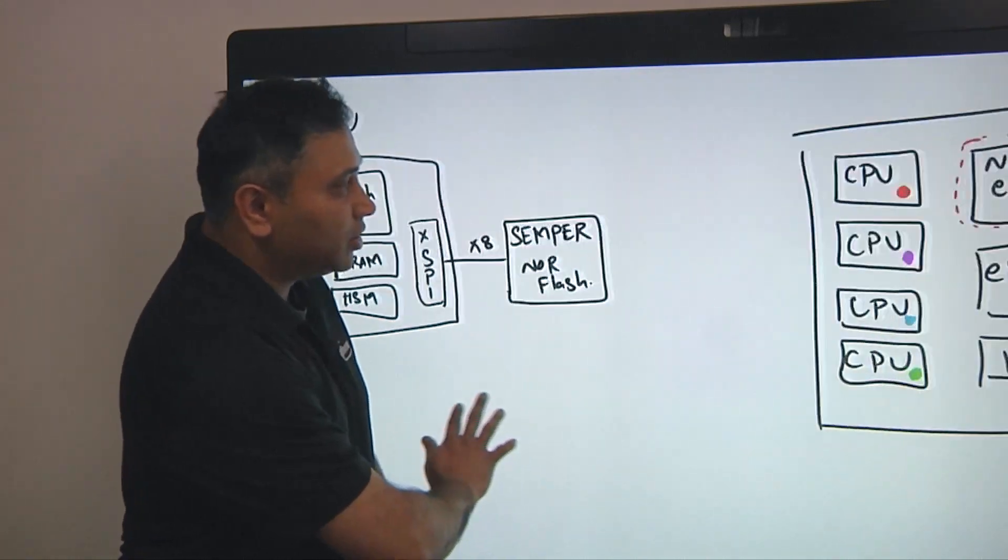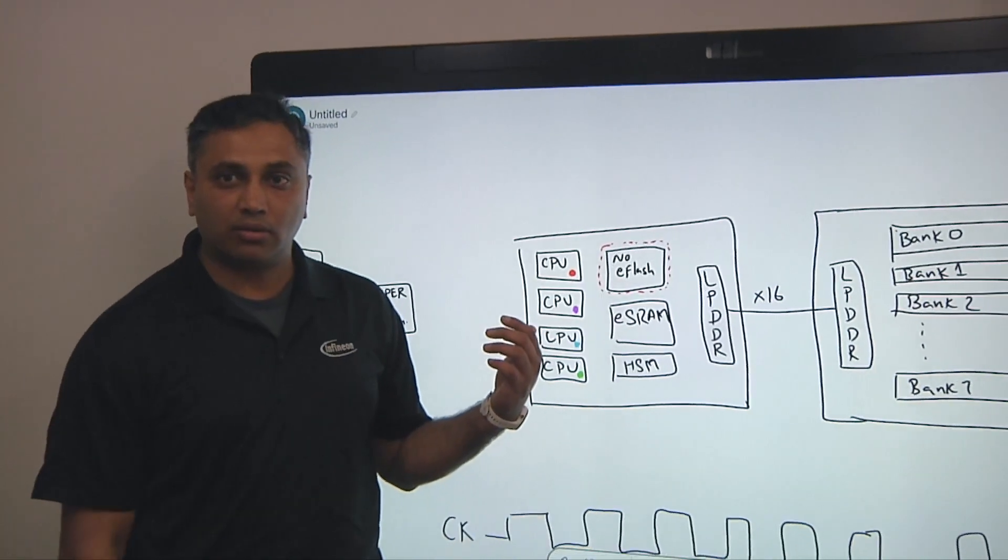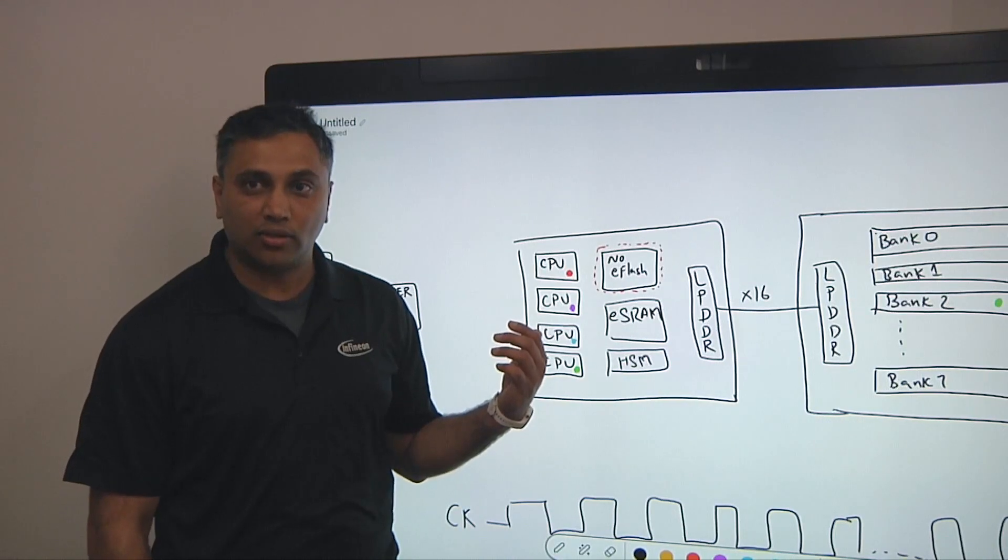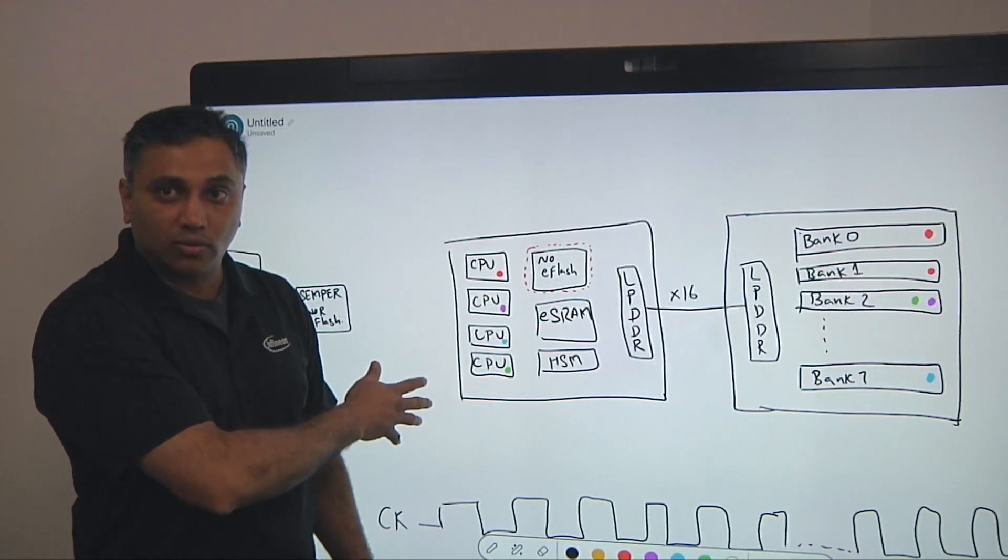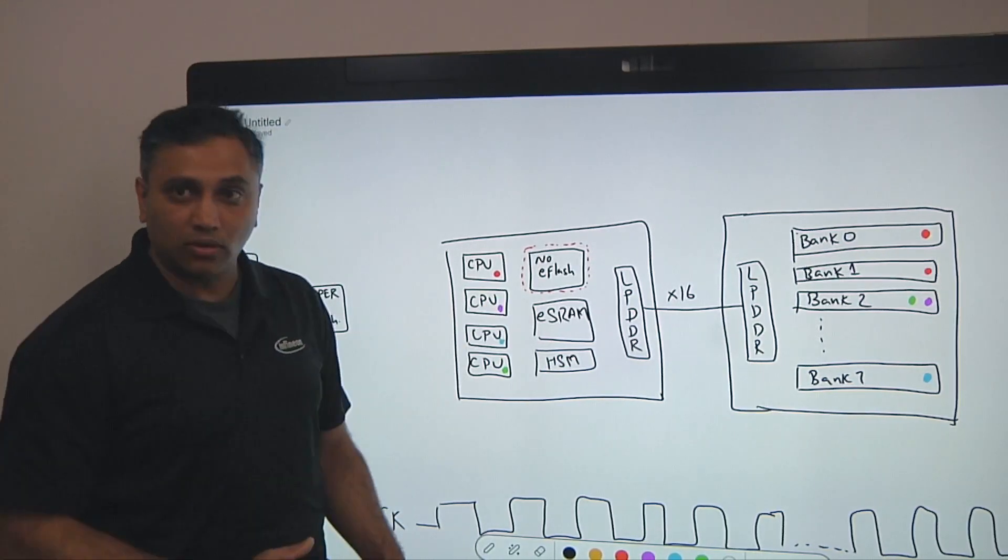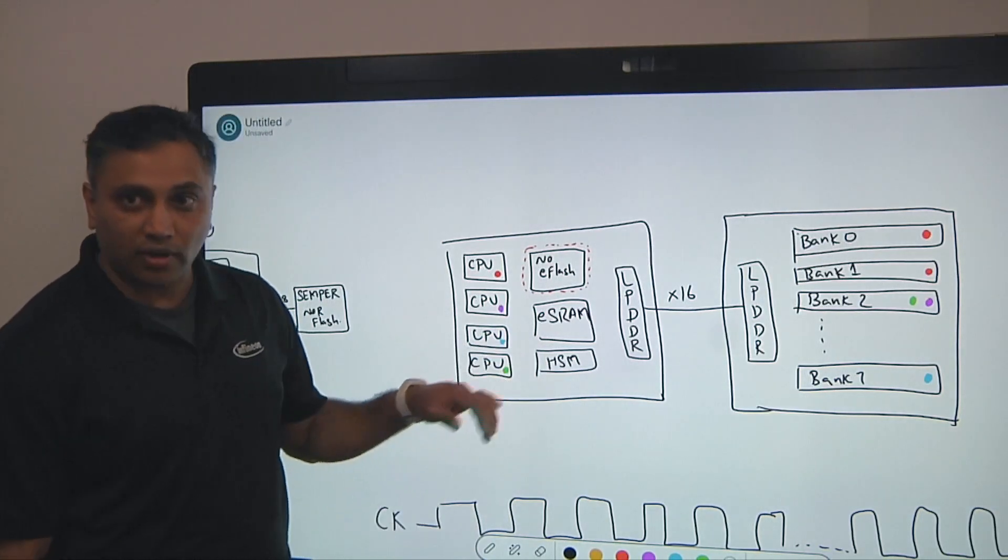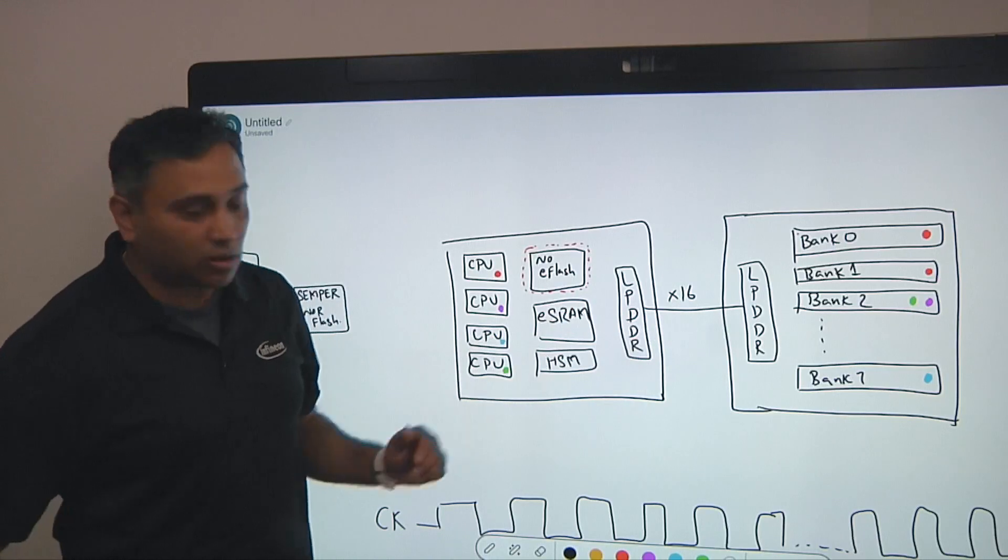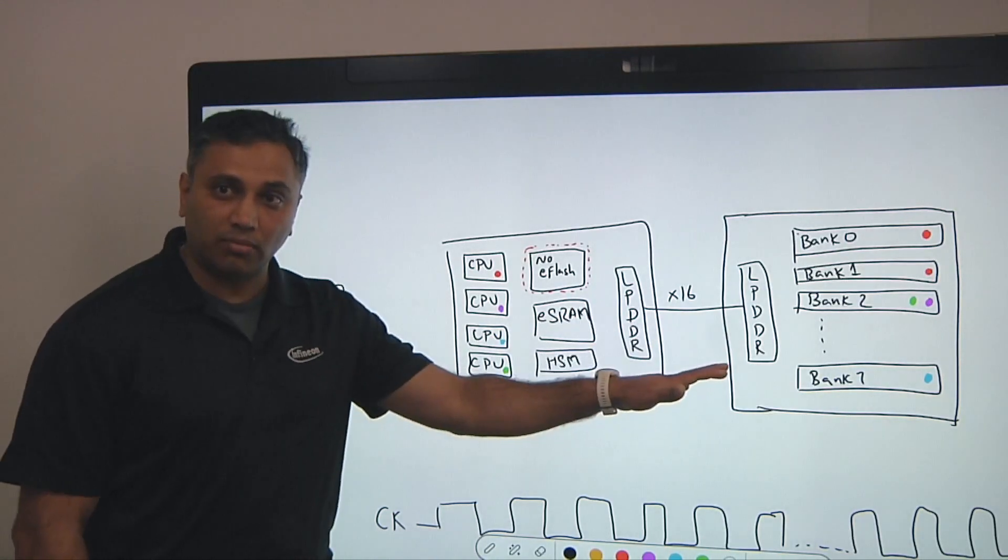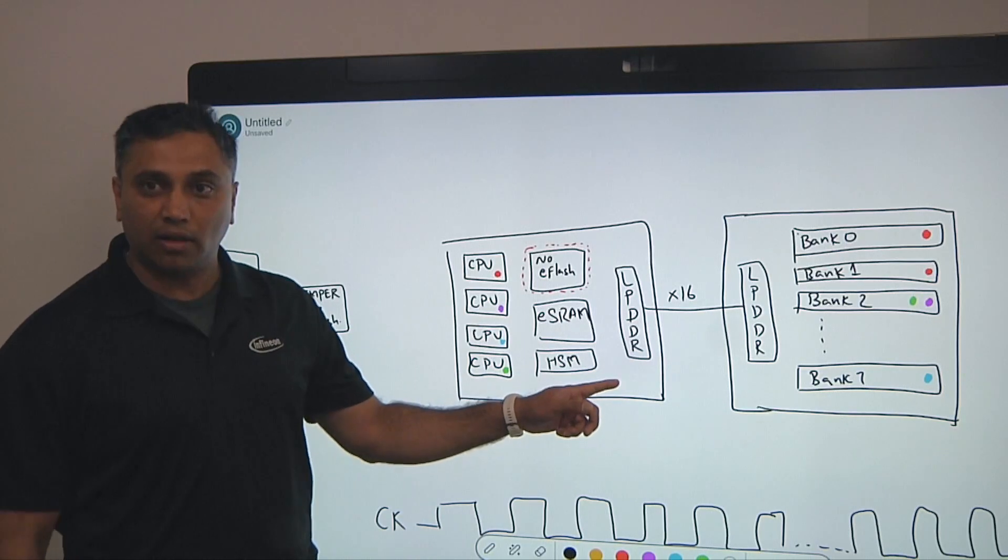Now, coming to what's happening today, you think about the new processors that are coming in designed for zonal architectures. You have more number of CPUs that you need to execute. These are running on advanced nodes, so there's no embedded flash, which I highlighted here in red. They still have the embedded SRAM, they still have the security. But in order to do execution of code from an external memory, they have to advance to a new interface like an LPDDR.